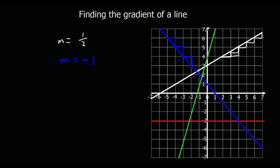How about the green line? For every 1 we go across, we go up 1, 2, 3. So the gradient of the green line is 3. For every 1 we go across, we go up 3.